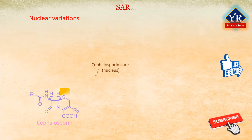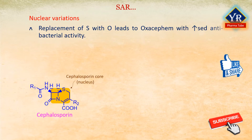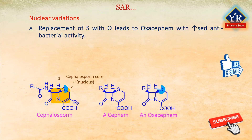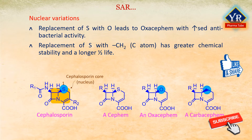Variations at cephalosporin core, in other words, nuclear variations. Replacement of sulfur with oxygen leads to oxocephens with increased antibacterial activity. Similarly, replacement of sulfur with a methylene group (CH2 group, or simply a carbon atom) has greater chemical stability and longer half-life.